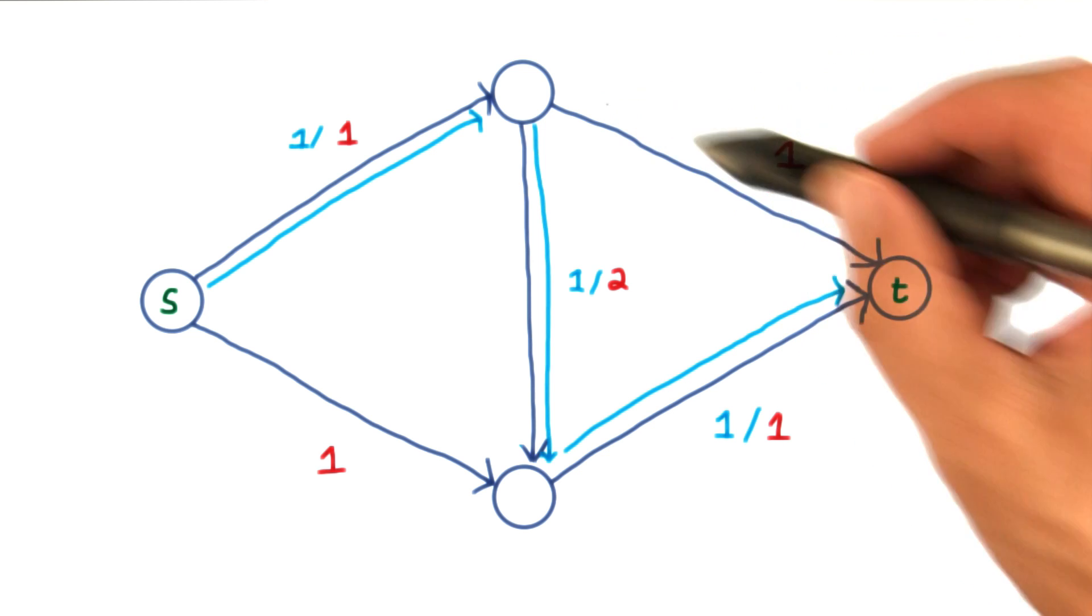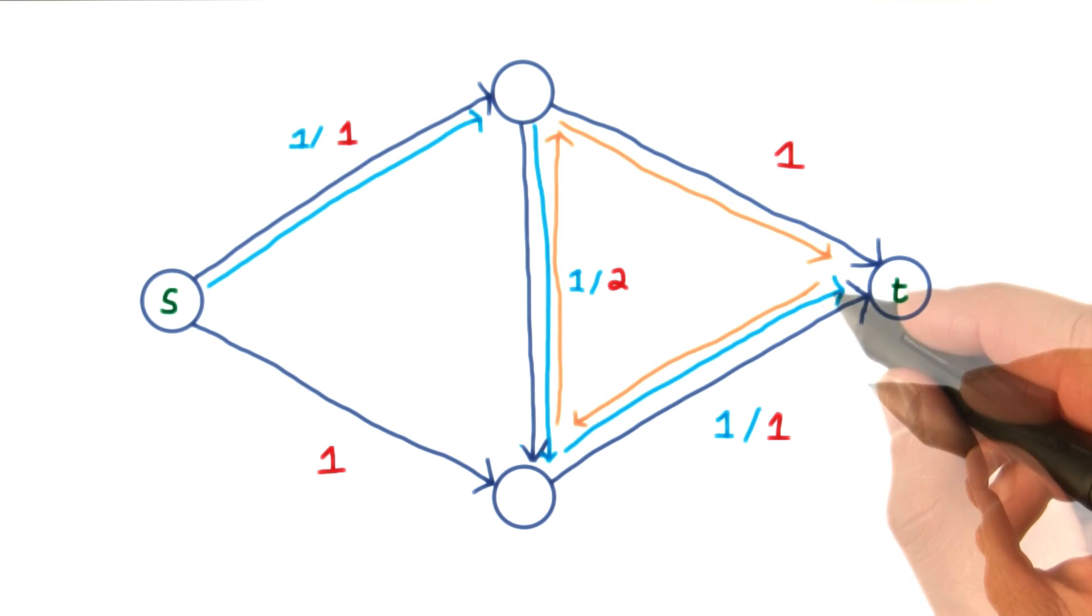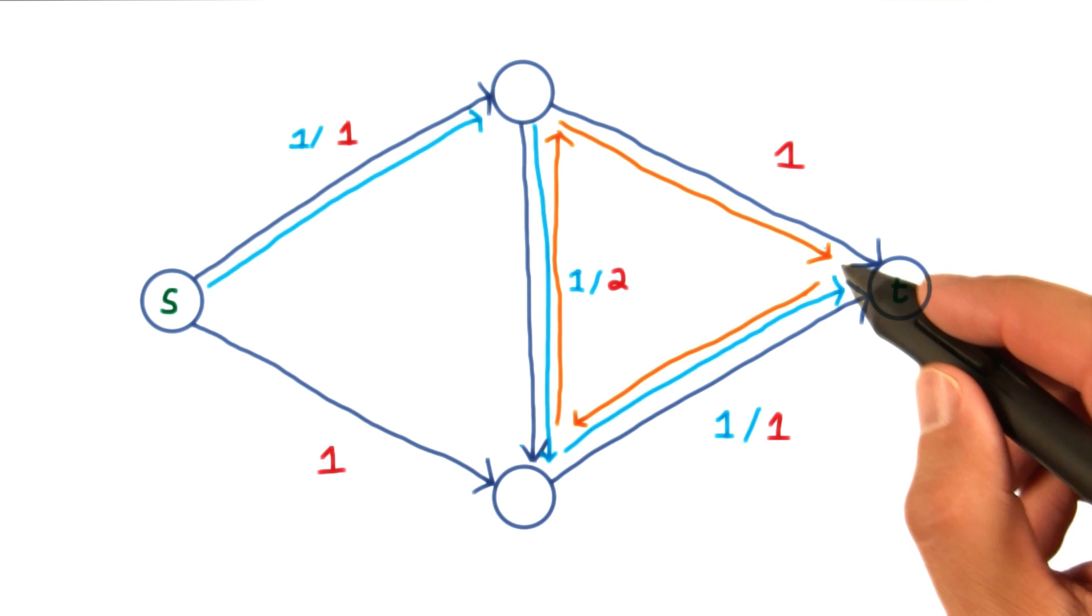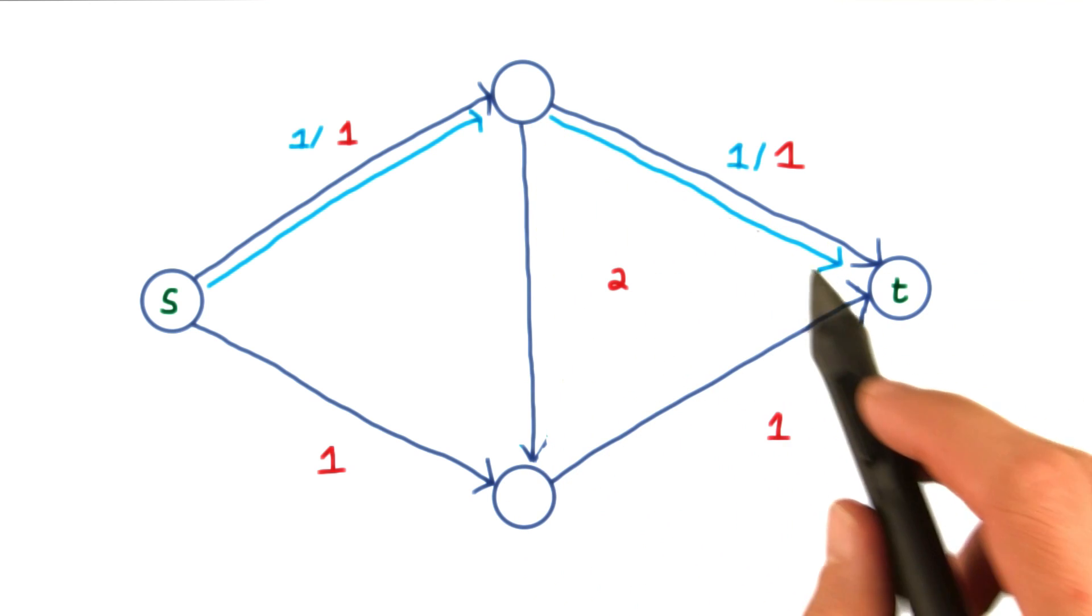Alternatively, if we just wanted to reroute the flow through the top link, we could add a circular flow like this, which would then reroute the flow.